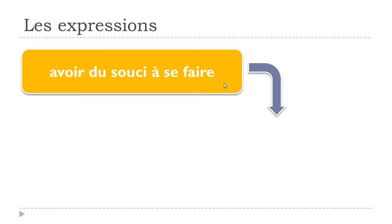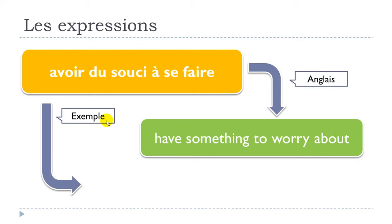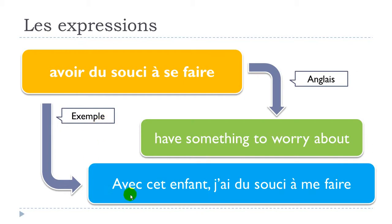You can see here the translation in English. Let's see one example: 'Avec cet enfant j'ai du souci à me faire' — with this kid, I have something to worry about.